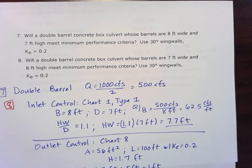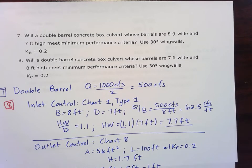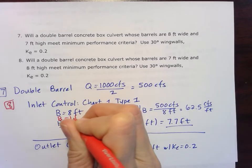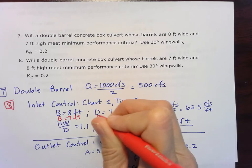So let's go ahead and take a look at that chart 1. So now instead of B being 8 feet, B is going to be 7 feet. And our D is going to be 8 feet.